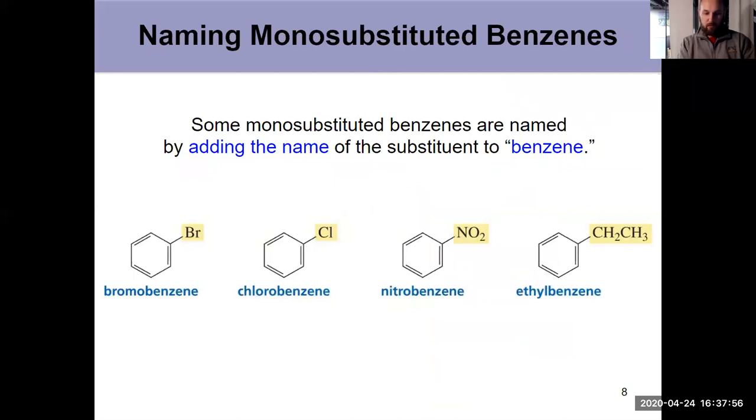So obviously, reactions with benzene are significant. And we need to know how to name them. Luckily, we've seen a lot of this. It's been sprinkled into the chapters earlier in the semester. If we have benzene with just one substituent, you just say the substituent name before benzene. That's not technically IUPAC. Some of them might be, but it's the easiest way to say it. Bromobenzene, chlorobenzene, nitrobenzene, ethylbenzene. Piece of cake.